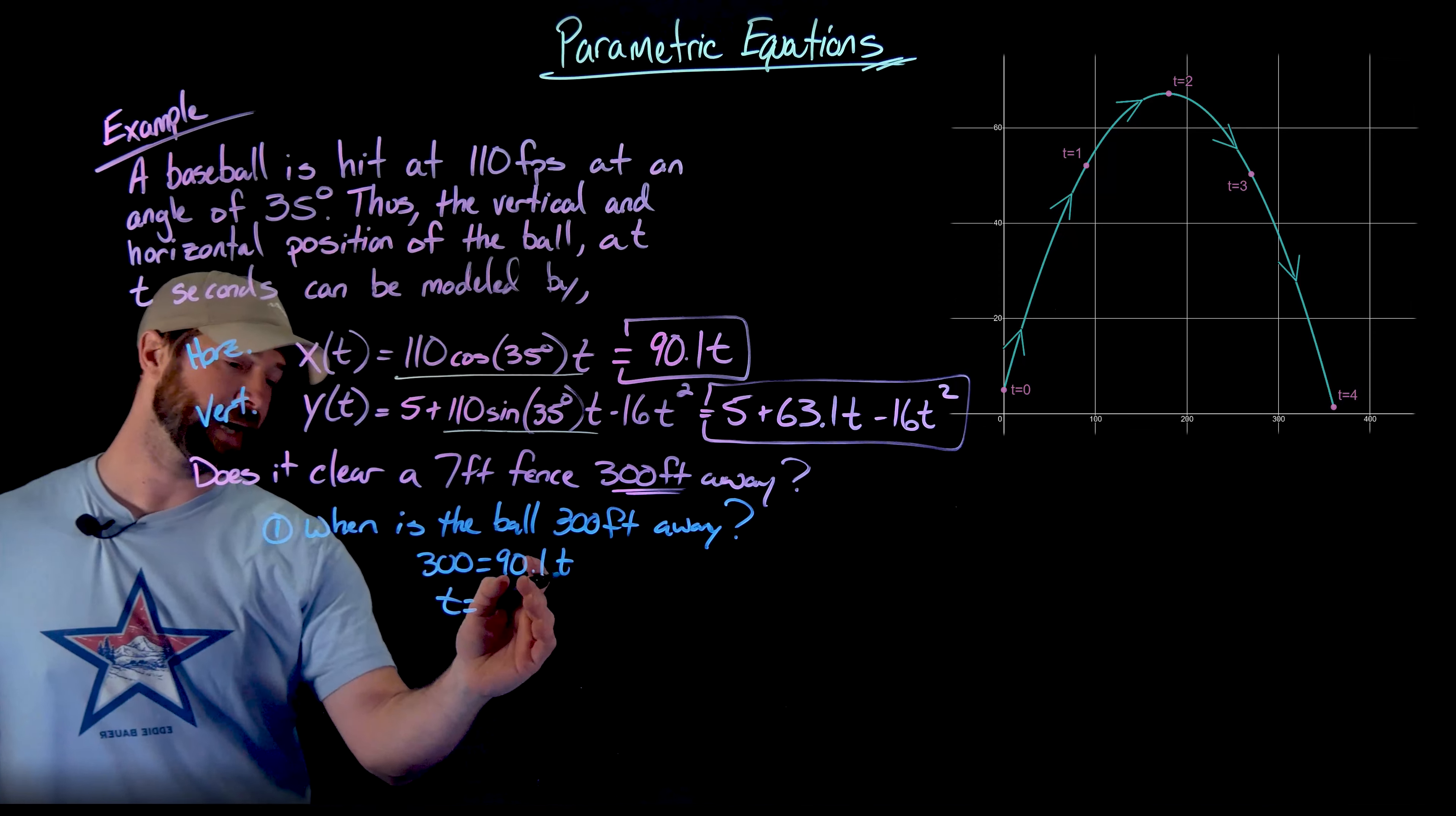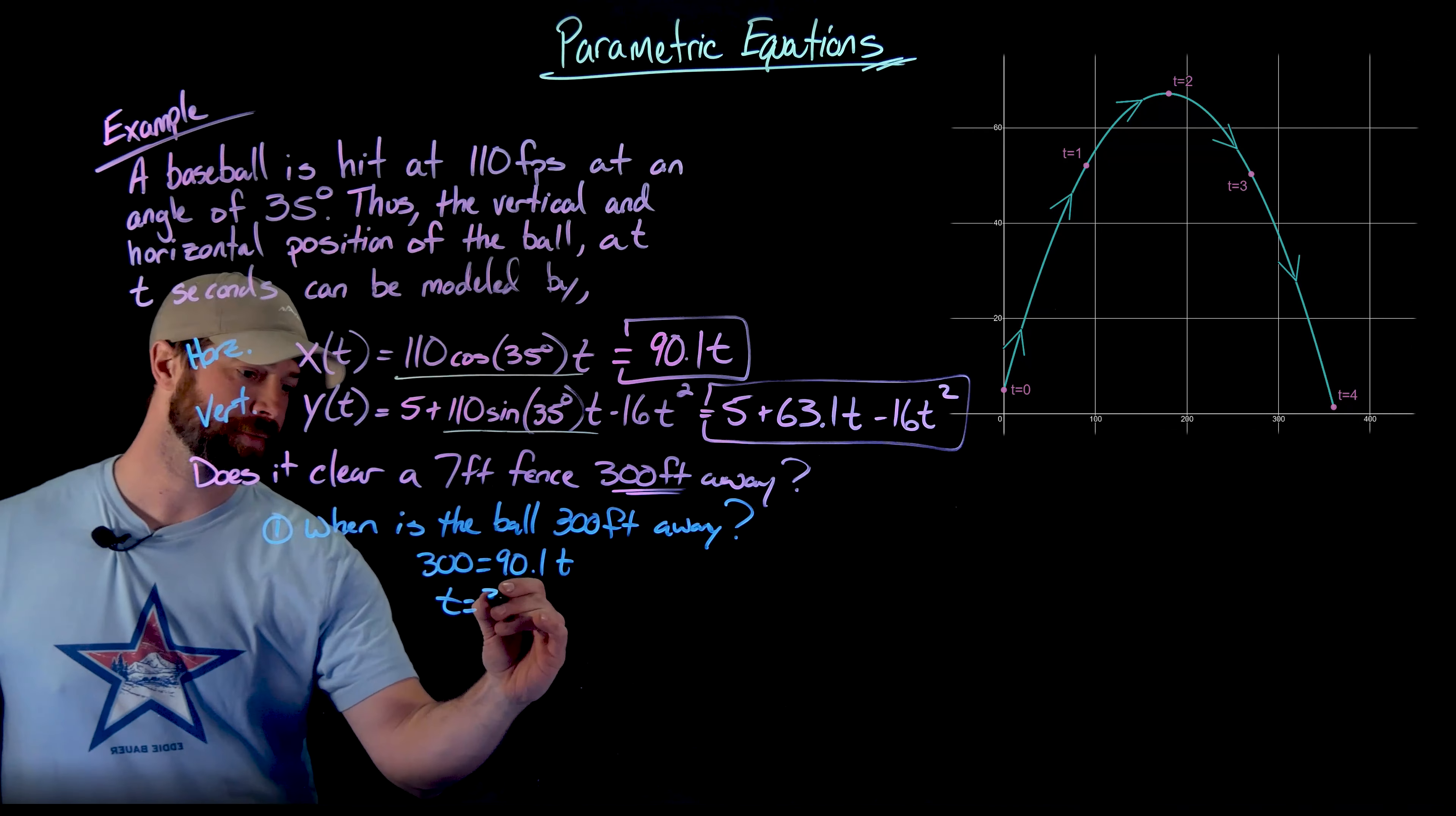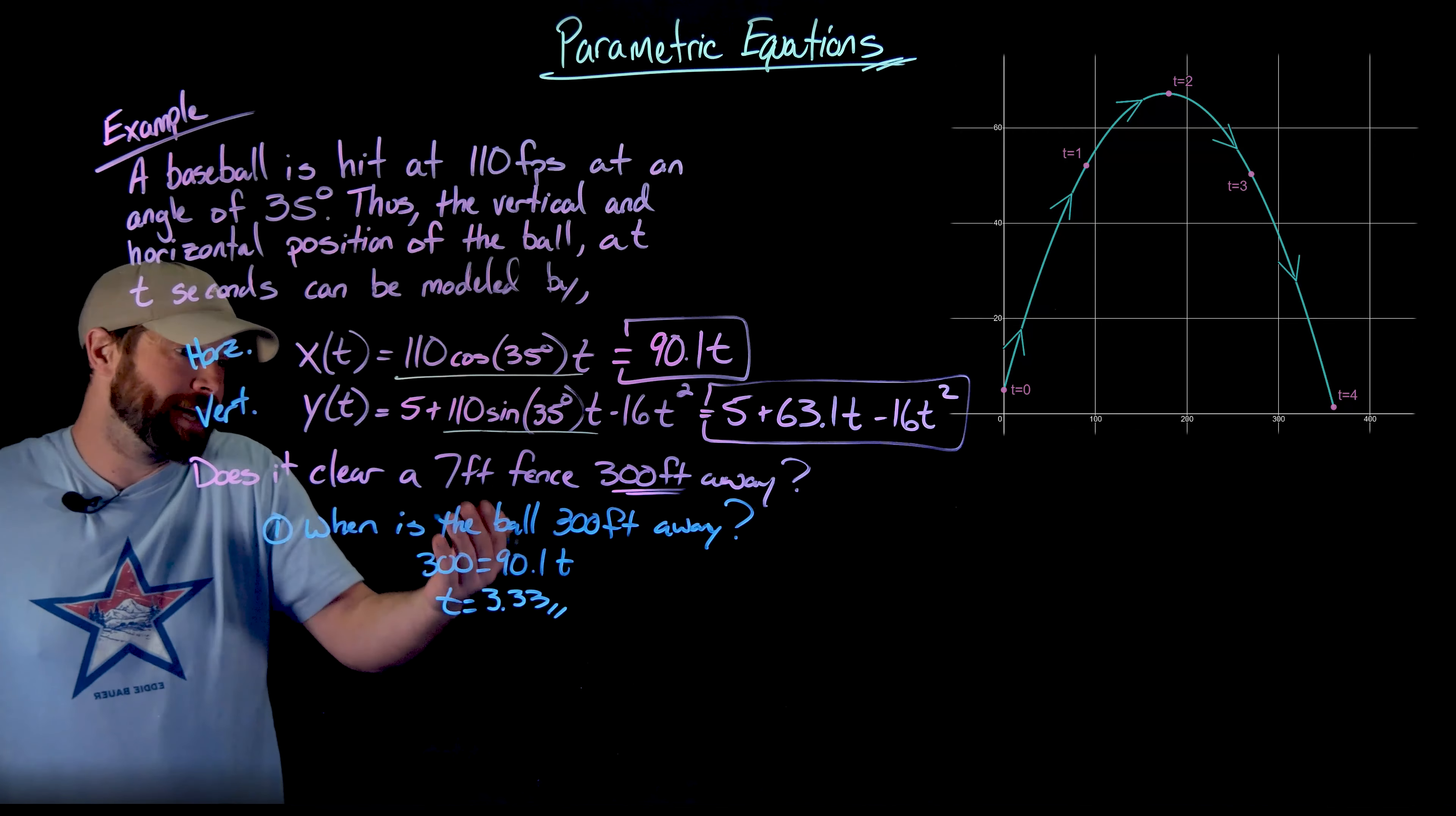Solving this is going to give me the time at which this ball is 300 feet away. So horizontally from the batter, it's 300 feet away. When I do this, I divide 300 by 90.1 and I get that this occurs at 3.33 seconds.